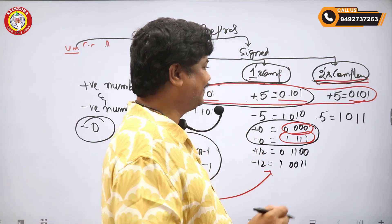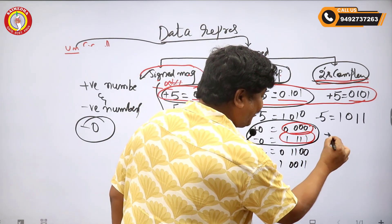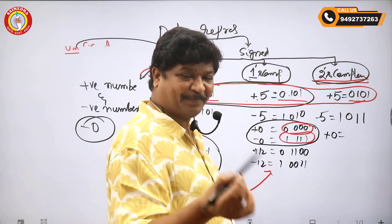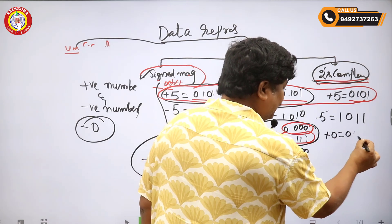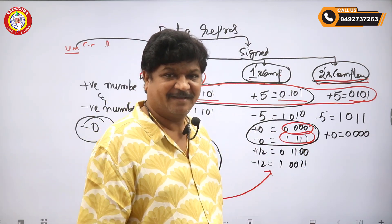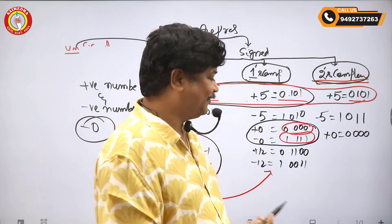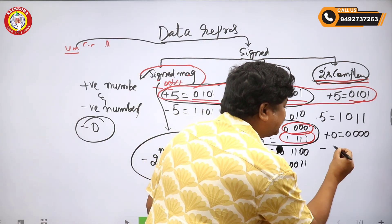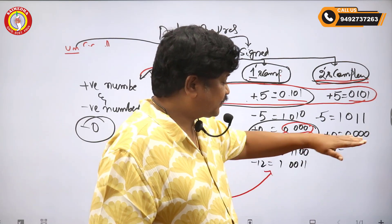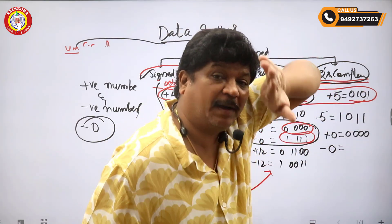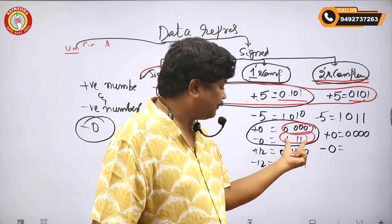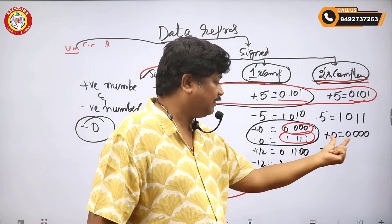Now, how to write zero? Plus zero can be written as 0000. For minus zero, first write the positive number and make the two's complement for that. The one's complement of 0000 is 1111.